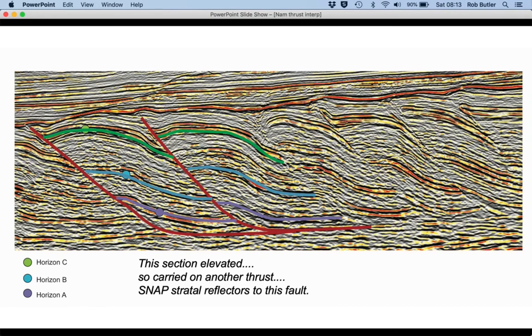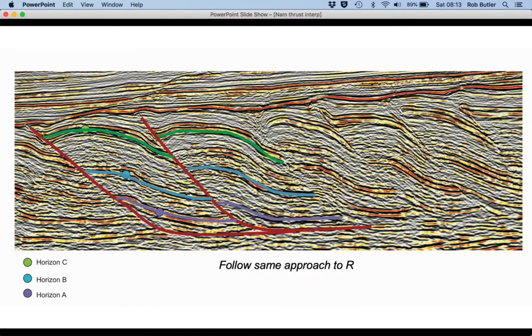So we've identified two fault structures so far, and we're showing them linking at depth onto a common detachment horizon or floor thrust. We can follow the same approach now and just push it through to the right, so let's just see where we go if we do that.